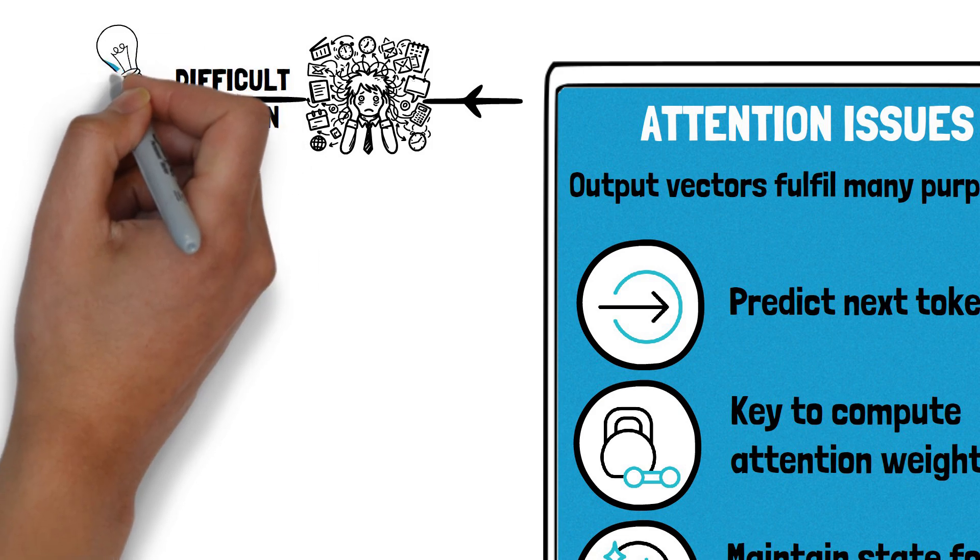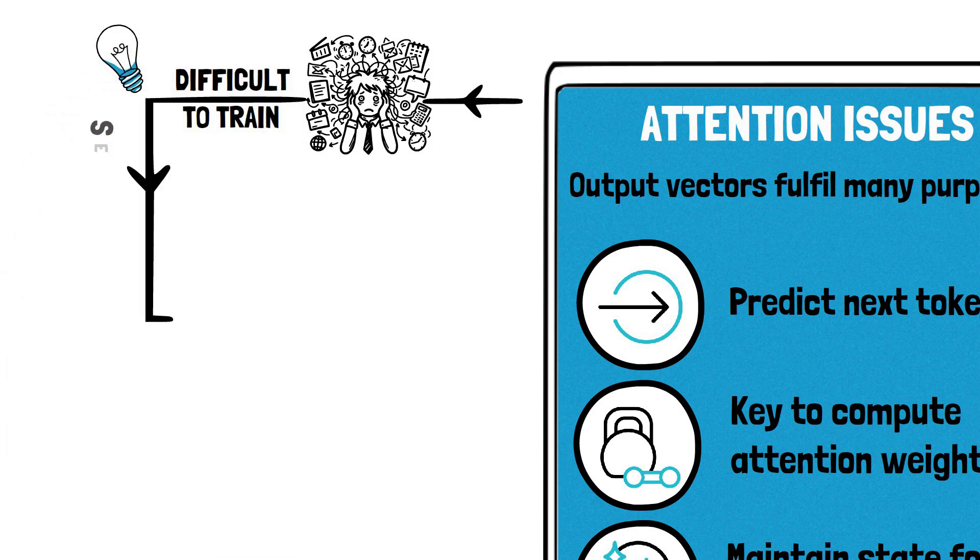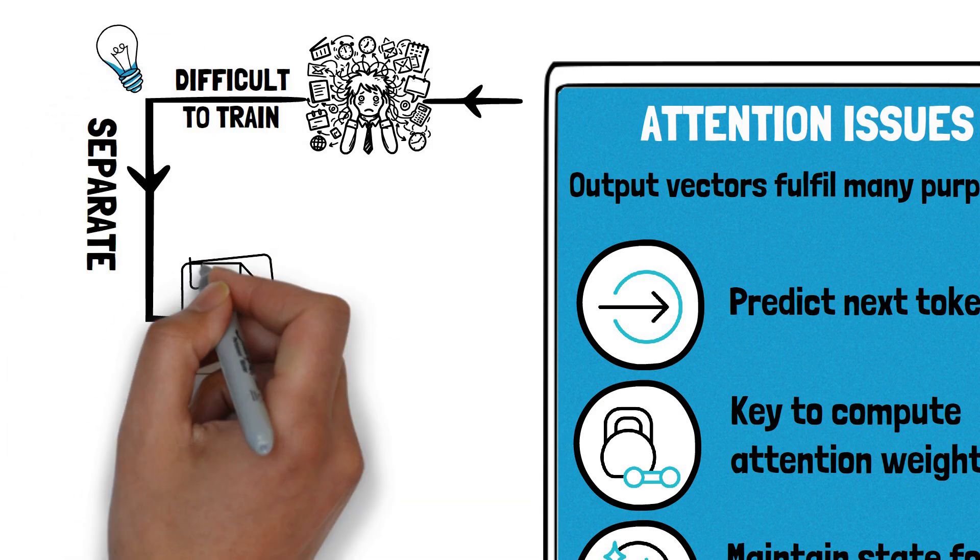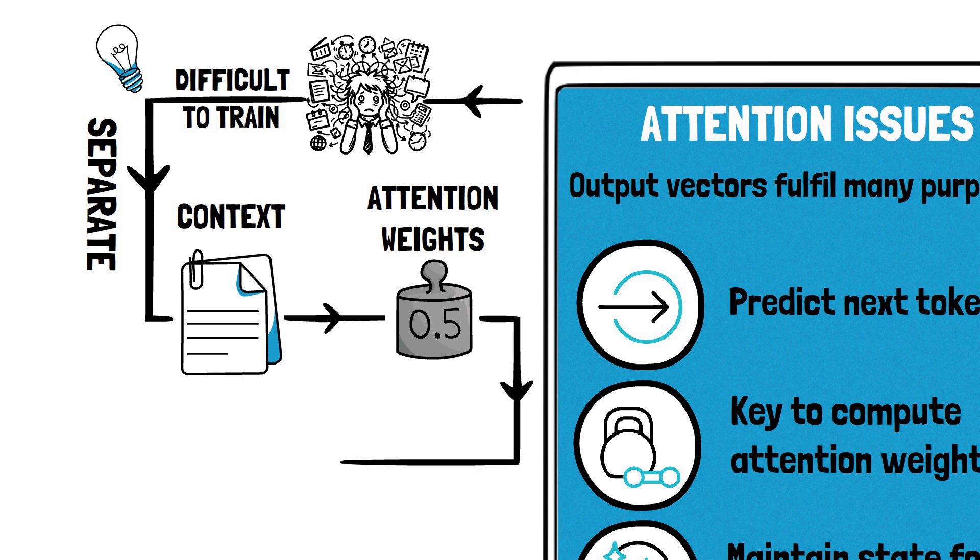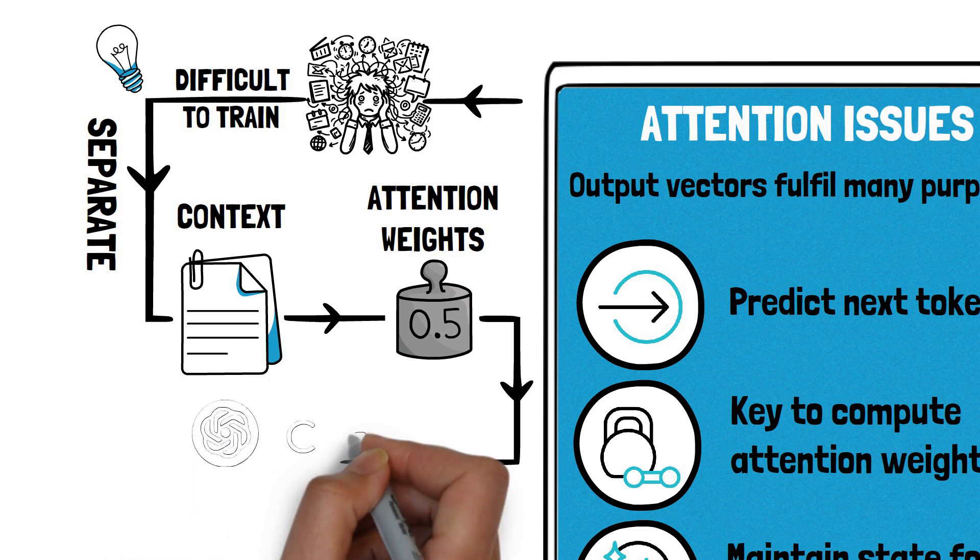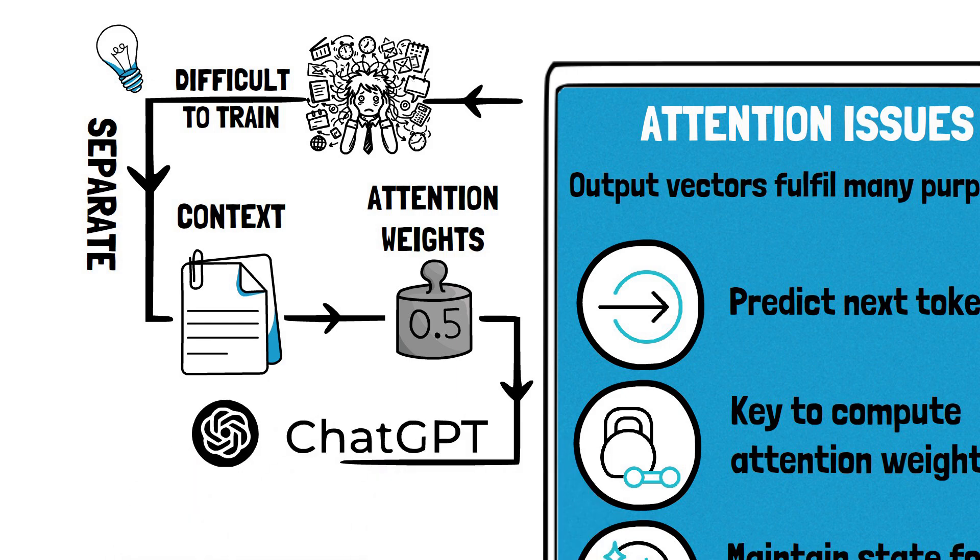A popular solution to this issue is to explicitly separate the vectors that are used to compute the context from those used to compute the attention weights. This is the principle behind the more sophisticated attention mechanism used by models such as Google's BERT and OpenAI's GPT series.